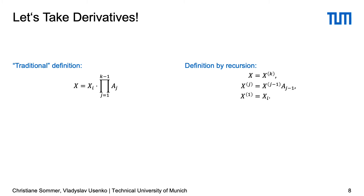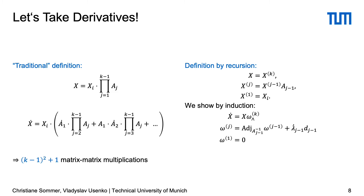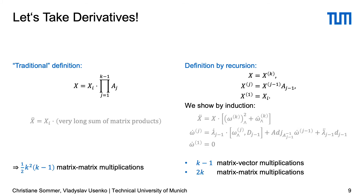We denote derivatives with respect to u by a dot. In the traditional or baseline formulation we get a sum of k-1 terms where each of them is a product of k matrices. For the recursive definition we show by induction that even the time derivative can be defined recursively, needing considerably fewer matrix multiplications. For second time derivatives, analogous reasoning leads to similar conclusions, with an even larger gain in the number of matrix operations needed.